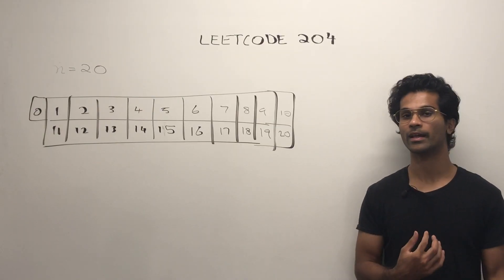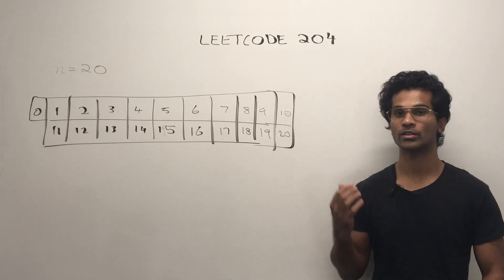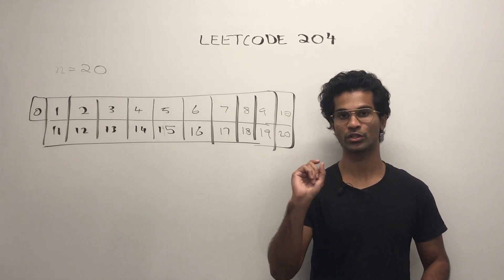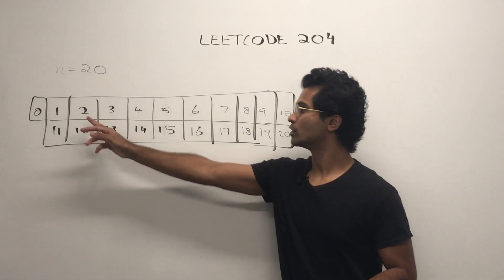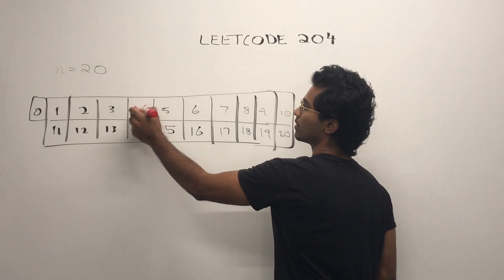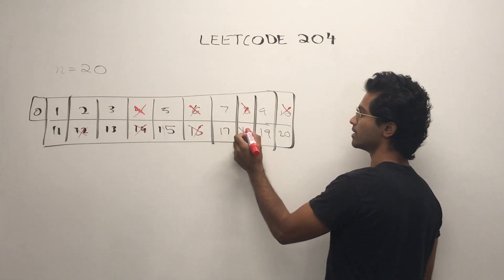A quick dry run will help you understand how we're eliminating them. So let's remember. First, we start with 2 and we eliminate starting at the square. So 2 squared is 4, then 6, 18, 20.